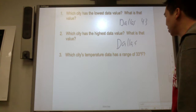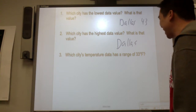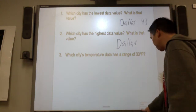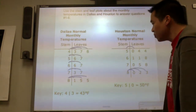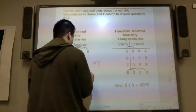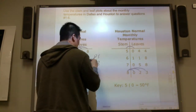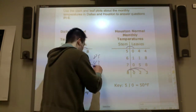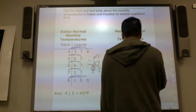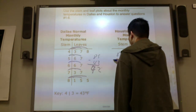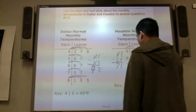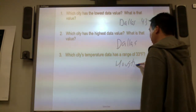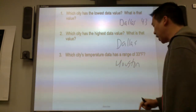Which city's temperature data has a range of thirty-three? Dallas: minimum forty-three, maximum eighty-five — that's a spread of forty-two degrees. For Houston: minimum fifty-three, maximum eighty-three — that's a spread of thirty degrees. So it must be Houston that has a range of thirty-three. That's the spread from the lowest to the highest.